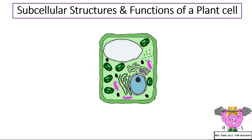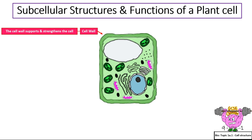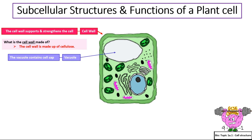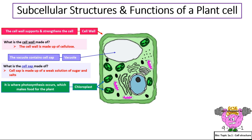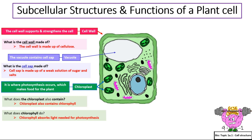Subcellular structures and functions of a plant cell. What is the function of the cell wall? The cell wall supports and strengthens the cell, and it is made of cellulose. What is the function of a vacuole? The vacuole contains the cell sap, which is made up of a weak solution of sugar and salts. What is the function of chloroplast? Chloroplast is where photosynthesis occurs, which makes food for the plant. Chloroplast also contains chlorophyll, which absorbs light needed for photosynthesis.